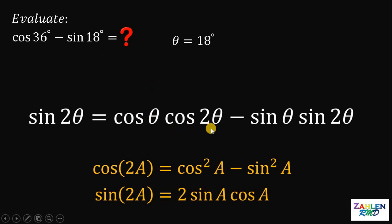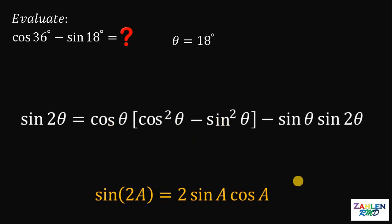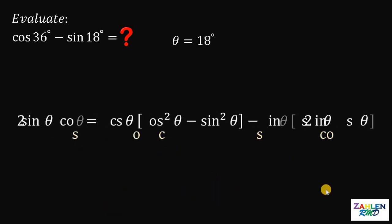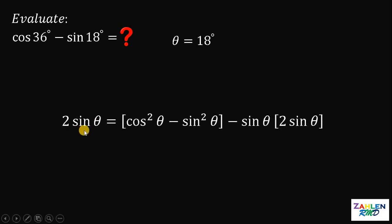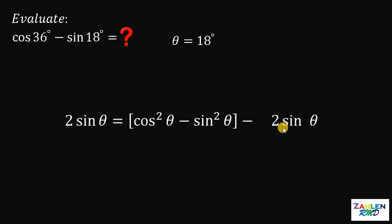Recall that cosine of 2A equals cosine squared A minus sine squared A, and sine of 2A equals 2 times sine A times cosine A. Cosine of 2 theta is equivalent to cosine squared theta minus sine squared theta. And sine of 2 theta can be replaced by 2 sine theta times cosine theta. Notice that all terms have a factor of cosine theta.